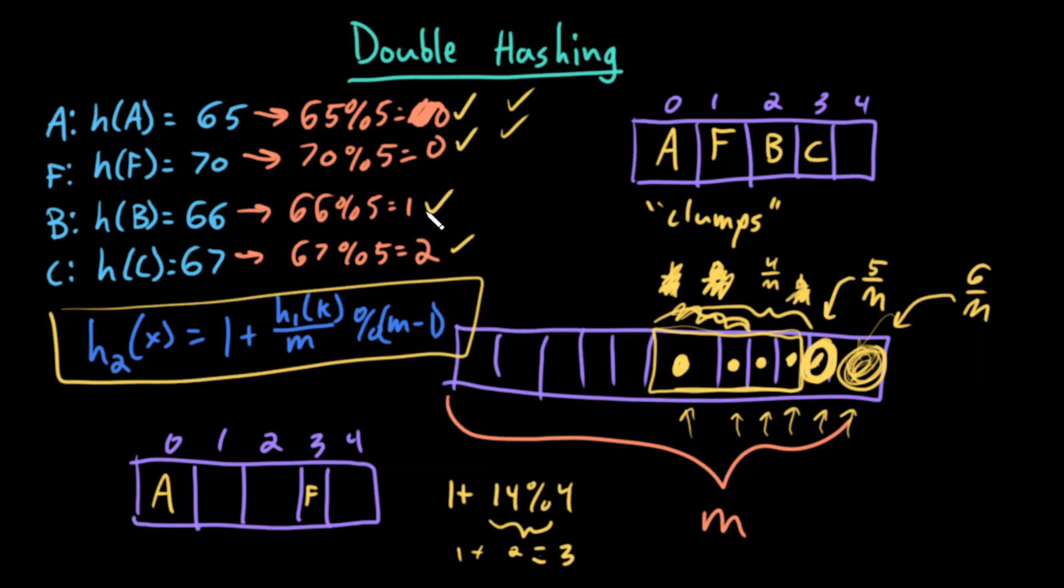66 mod 5 is 1 - now there's no collision here. 67 mod 5 is 2 - now there's no collision. In general, we need to make sure that our array stays pretty empty to avoid collisions. But if we do still have collisions with open addressing, we can use double hashing to hopefully prevent this clump growth. That's what we're going to do.